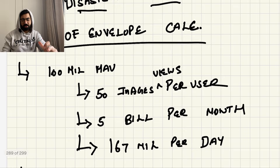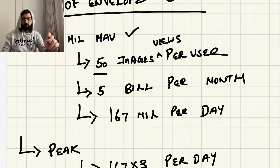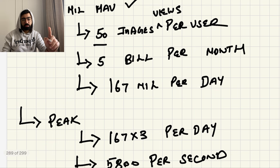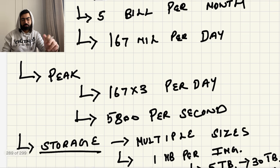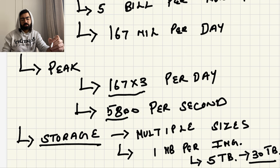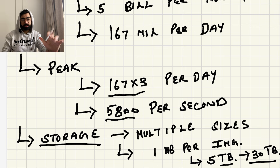Let's do back of the envelope calculations. We have 5 billion views per month, which equals about 167 million images per day being served. For peak traffic, that translates to approximately 5,800 requests per second. For storage, since we need to store multiple sizes — low resolution and high resolution — averaging 1 MB per image, that comes to about 5 TB to 30 TB of storage needed.